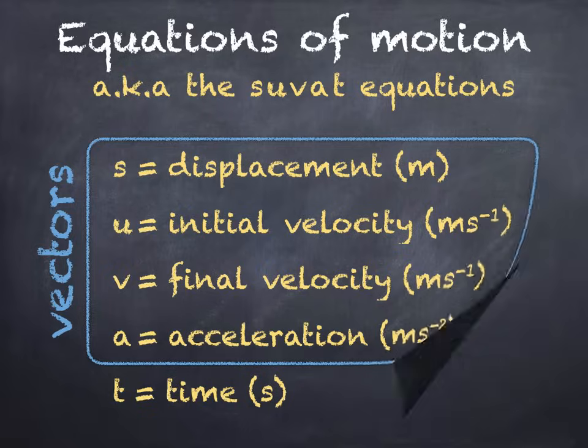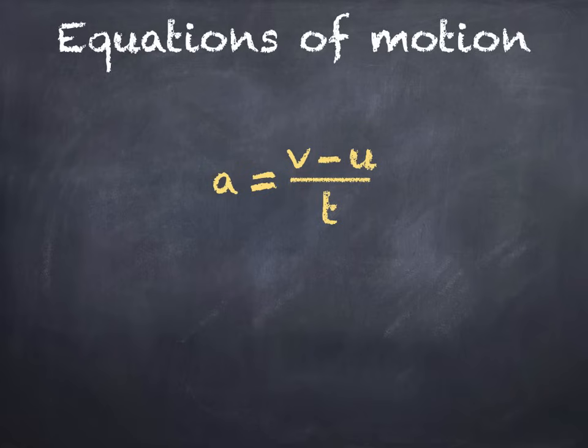Here's the first. We'll start with an equation we already know from National 5, a is v minus u over t, and rearrange it to give the new equation v is equal to u plus at. It's a good idea to practice writing down these derivations yourself, so in the first line you'd write a is equal to v minus u over t.